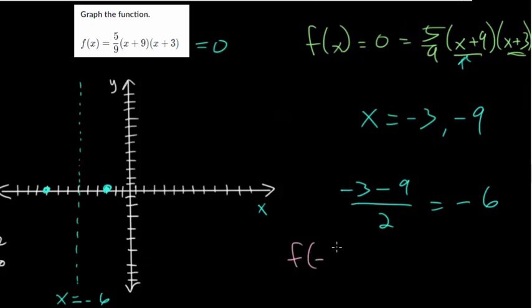So f(-6), and we'll have 5/9 times (-6 + 9) is 3, and -6 + 3 would be -3. So this becomes a -9. So you have 5 over 9 times -9. So the nines cancel.